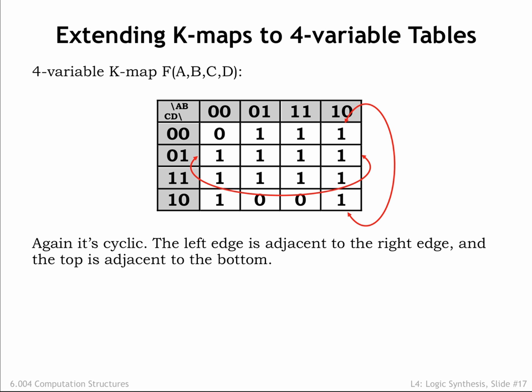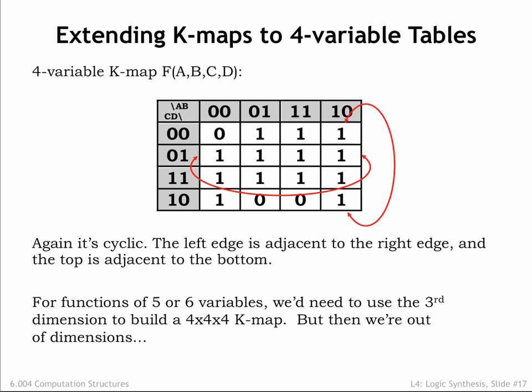Again, as we move to an adjacent column or an adjacent row, only one of the four input labels will have changed. To build a K-map for functions of 5 variables, we'd need a 4x4x4 matrix of values. That's hard to draw on the 2D page, and it would be a challenge to tell which cells in the 3D matrix were adjacent.